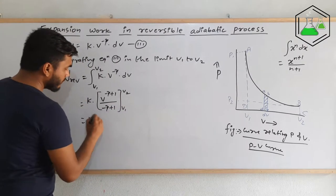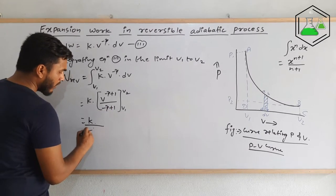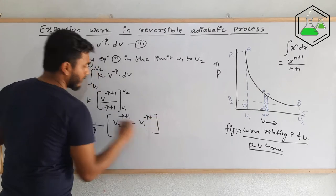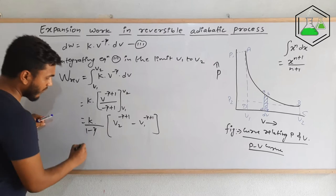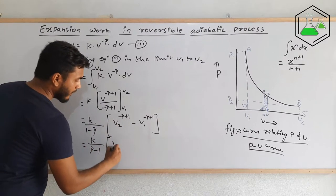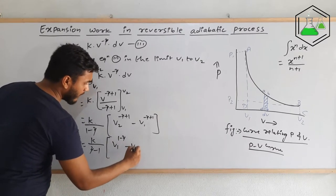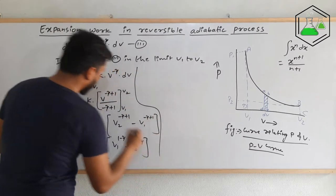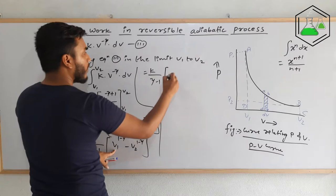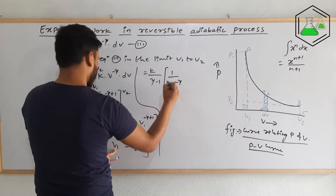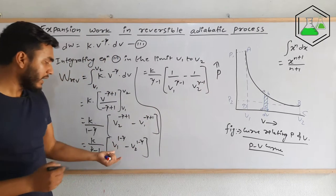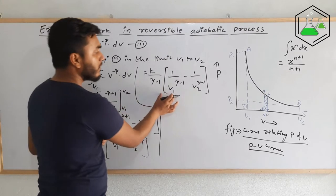Taking K by (1 minus gamma) out, and evaluating the limits, we get V2^(1-γ) minus V1^(1-γ). Rearranging — changing the sign and swapping terms — it becomes K divided by (gamma minus 1) times [V1^(1-γ) minus V2^(1-γ)]. This can further be written as K divided by (gamma minus 1) times [1/V1^(γ-1) minus 1/V2^(γ-1)]. Let us call this equation four.